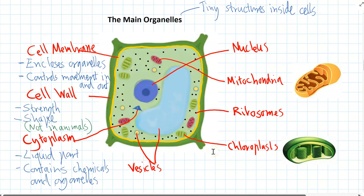The most important organelle floating around is the nucleus. It's like the brain or the control centre of the cell. As we learned in the genetics unit, the nucleus is where all the DNA is, packaged up into chromosomes. That's how the cell controls itself.